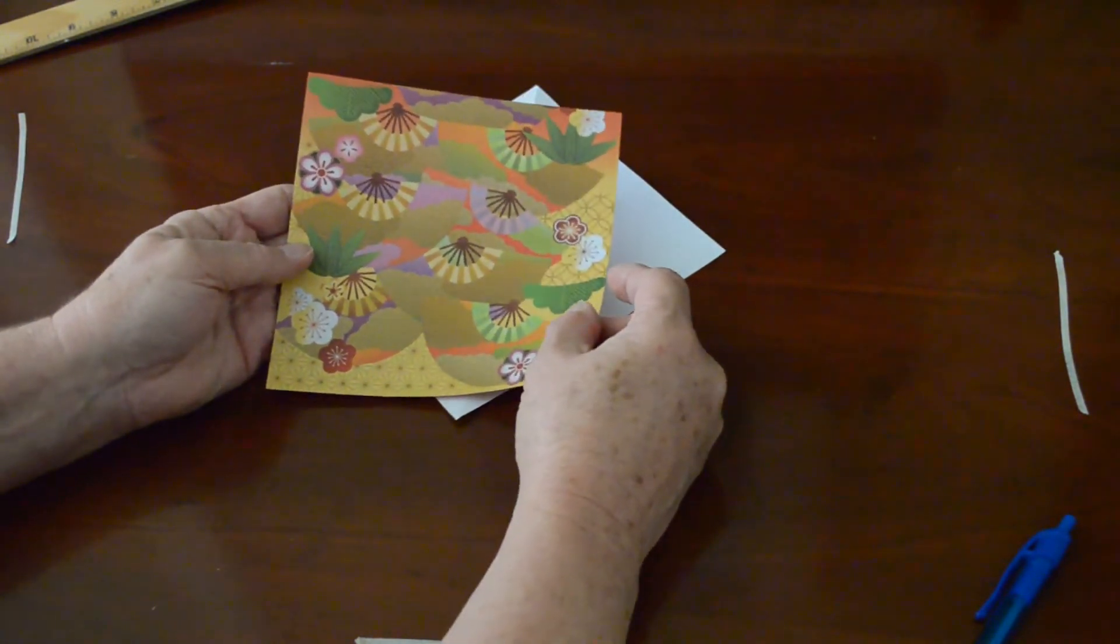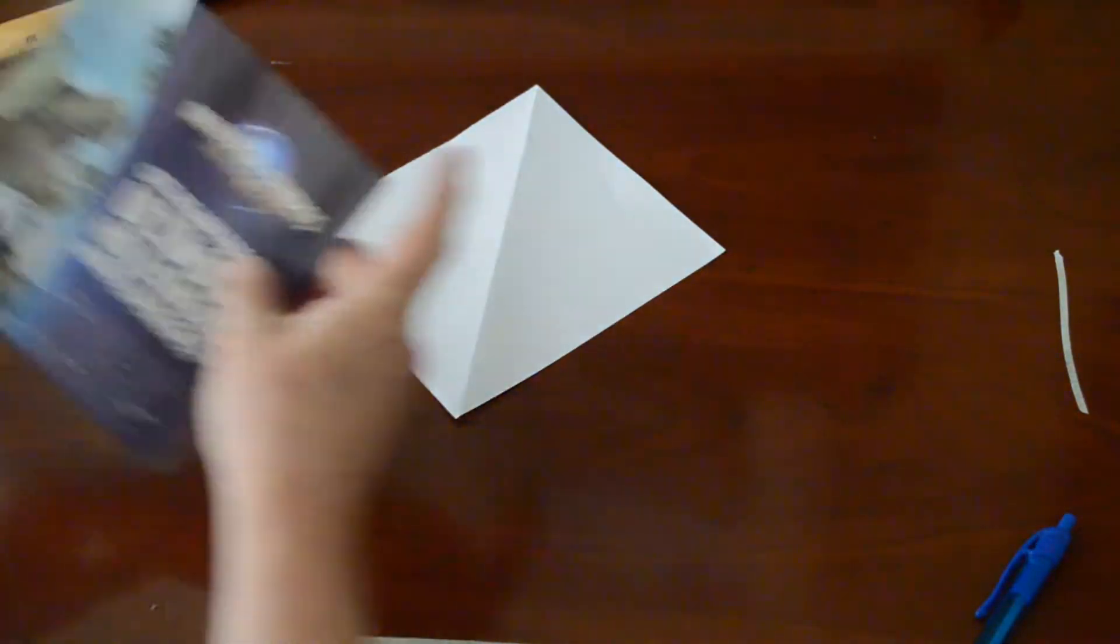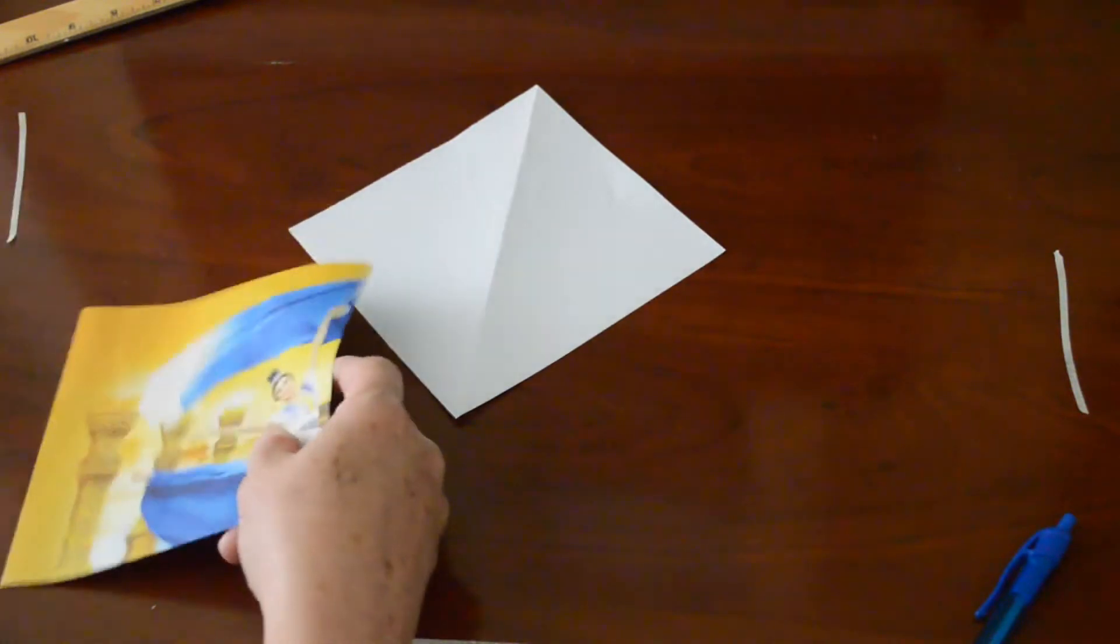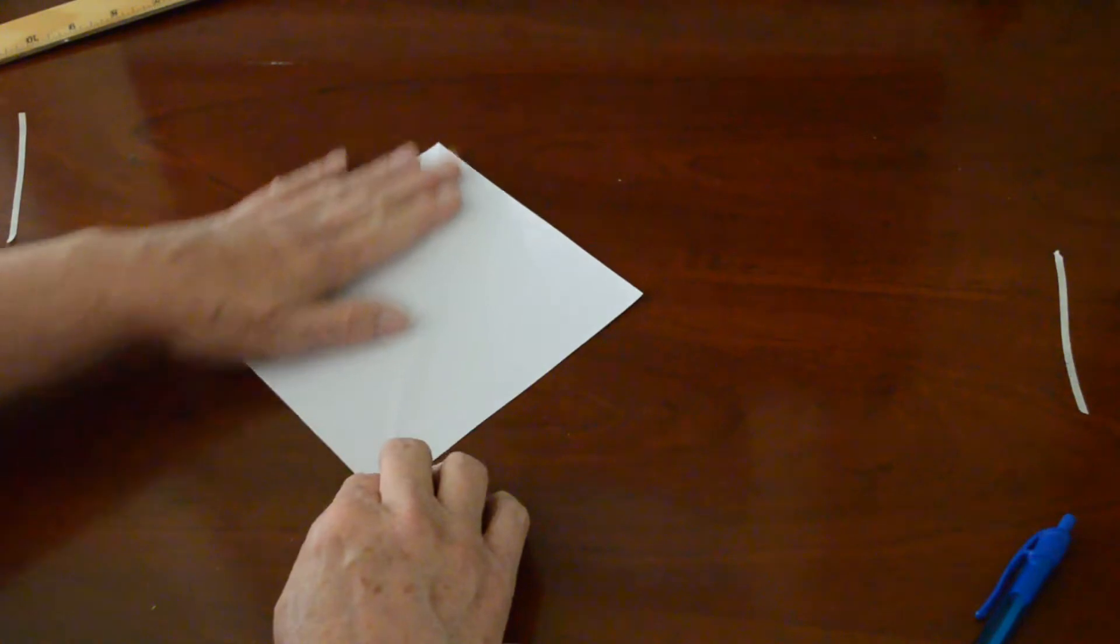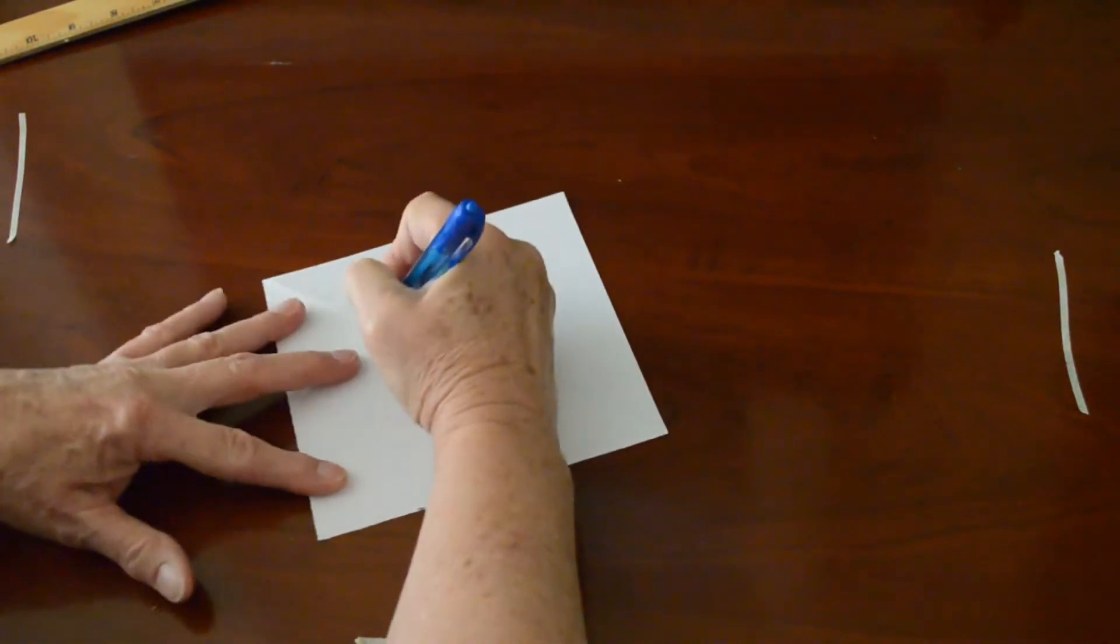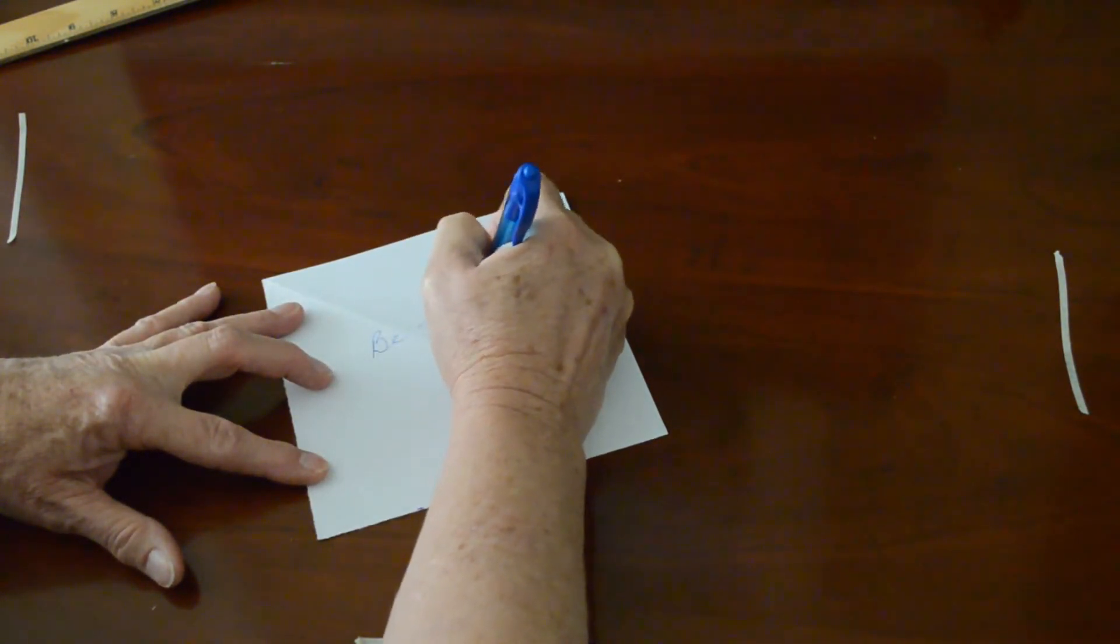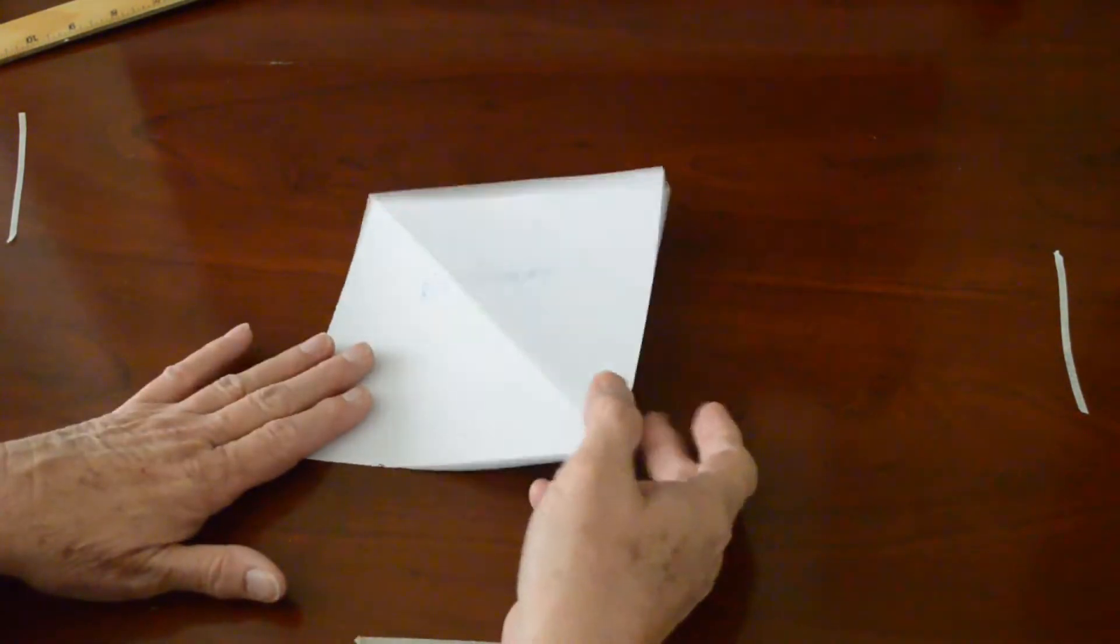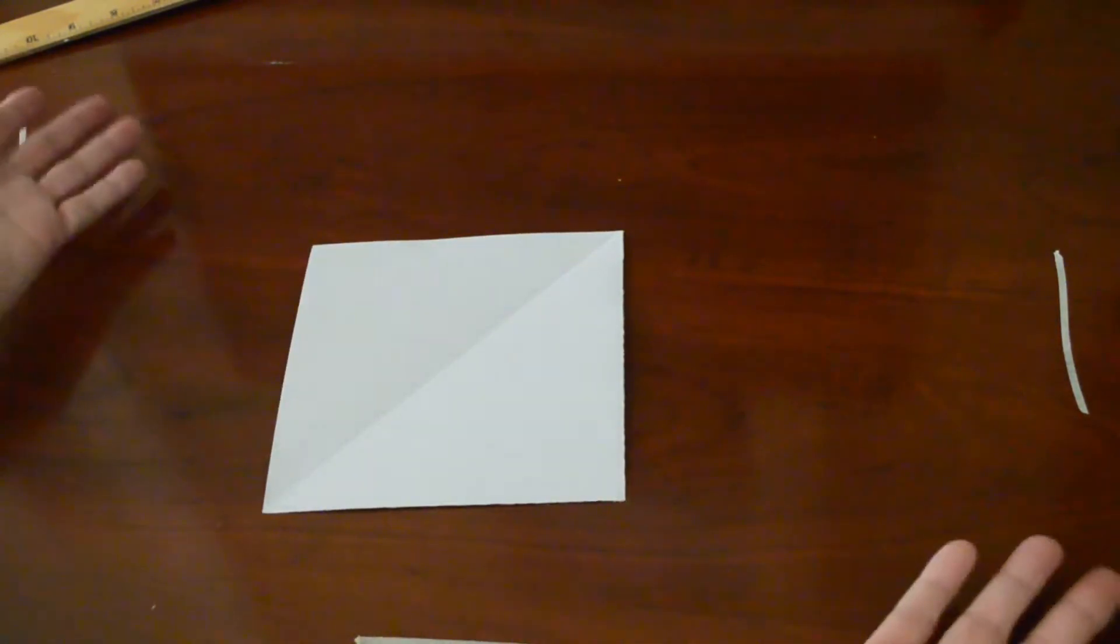I'm going to show you on the white paper in case you don't have origami paper. But if you're going to have them at the gallery, it would be fun if it was colored in some way. So let's use the white paper. And I'm going to go ahead and write be happy. And this way you'll see how I fold it. So first we're going to fold it so that the be happy is on the bottom and it's just plain on top.